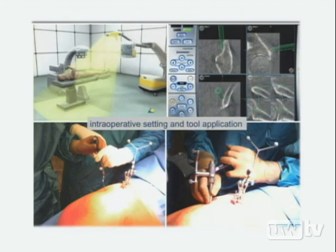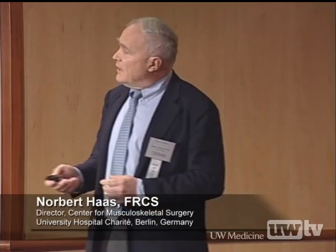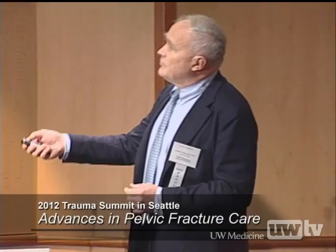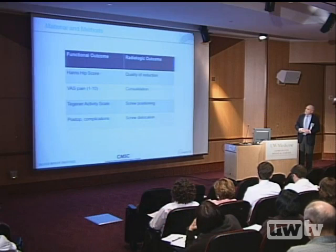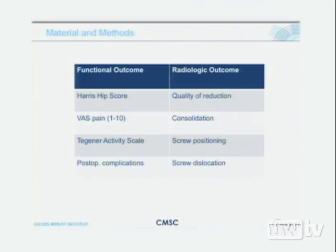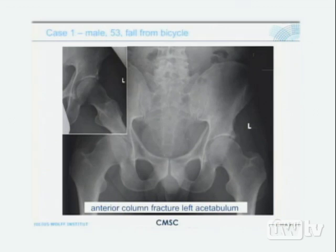The reference clamp is always fixed to the unfractured, stable part of the bone. The software connects the scan and navigation system. We assess functional outcome using Harris Hip Score, VAS pain score, and Tegner Activity Scale, along with postoperative complications and radiological outcome including reduction quality, consolidation, screw positioning, and screw dislocation.